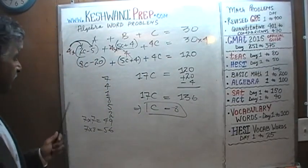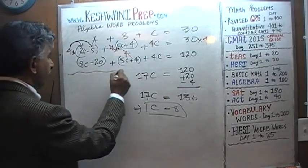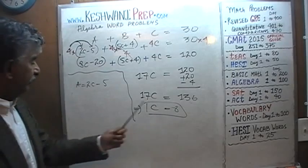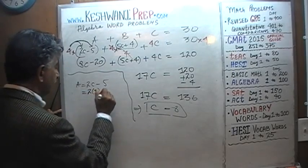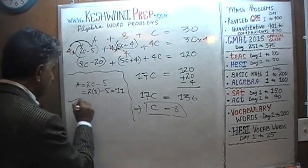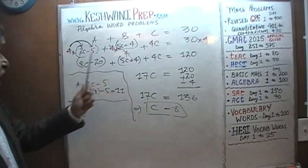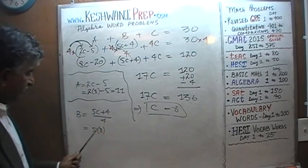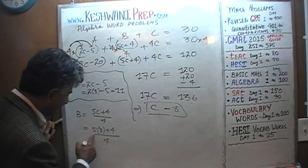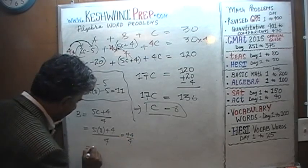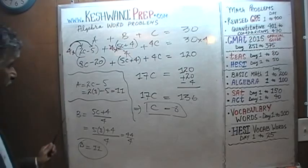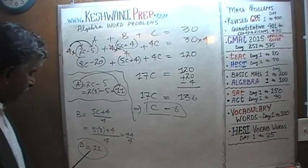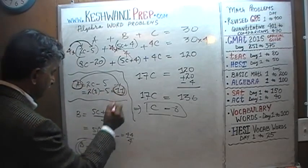Now we find A and B. A equals 2C minus 5 equals 2 times 8 minus 5 equals 11. B equals (5C plus 4) over 4 equals (40 plus 4) over 4 equals 44 over 4 equals 11. So Adam is 11 and Billy is also 11 — they may be twins or born the same year to different mothers.